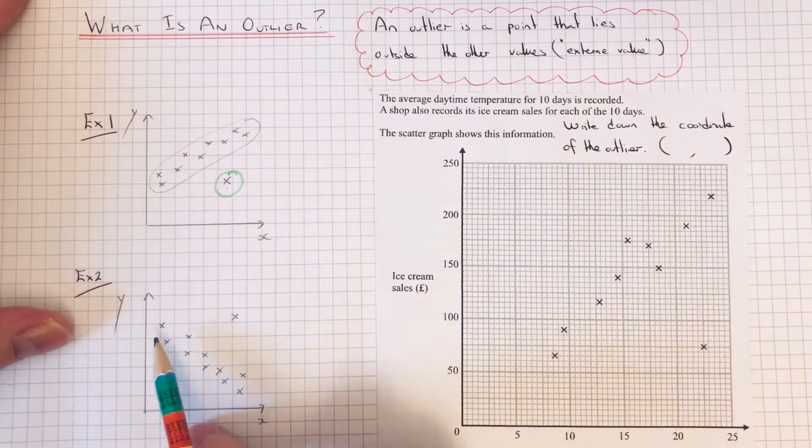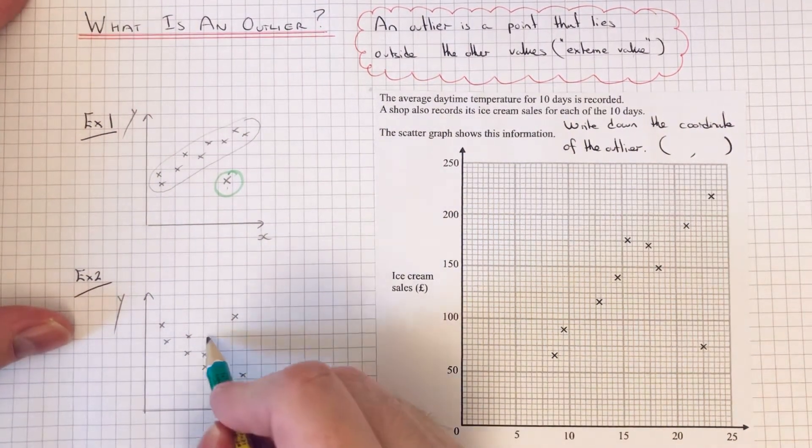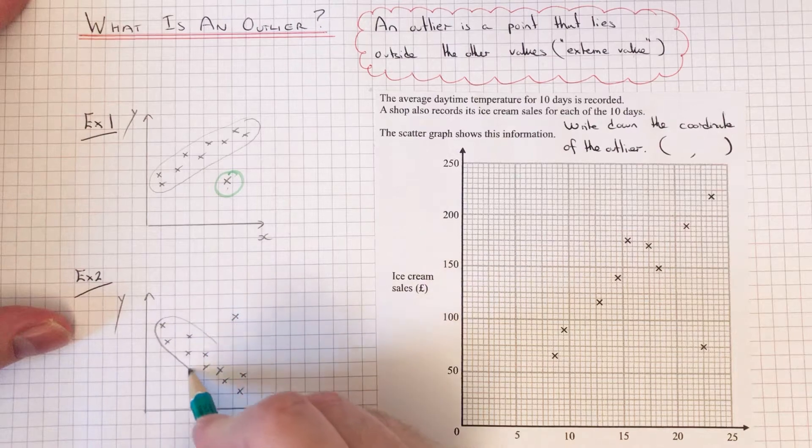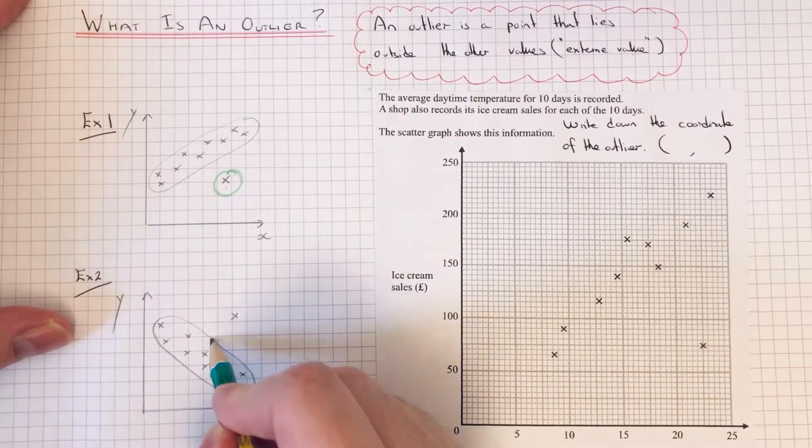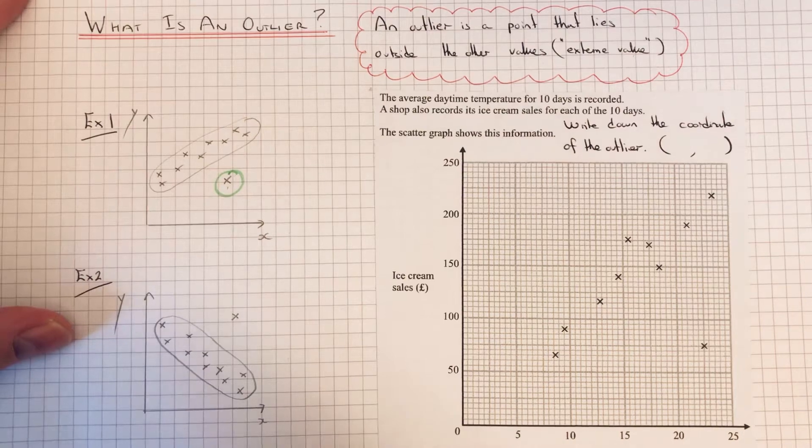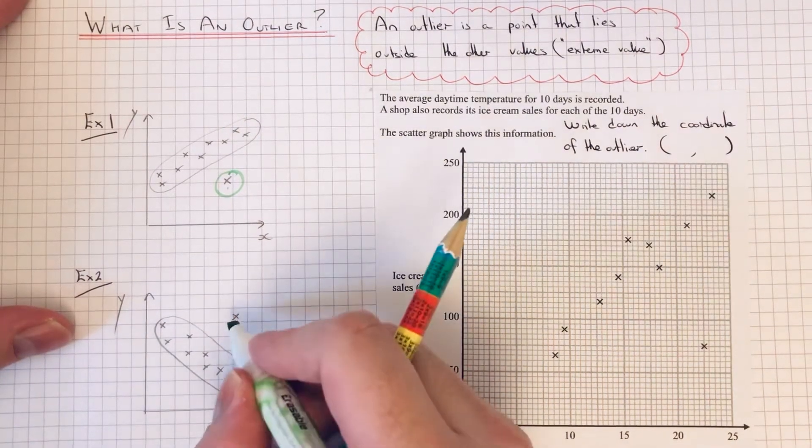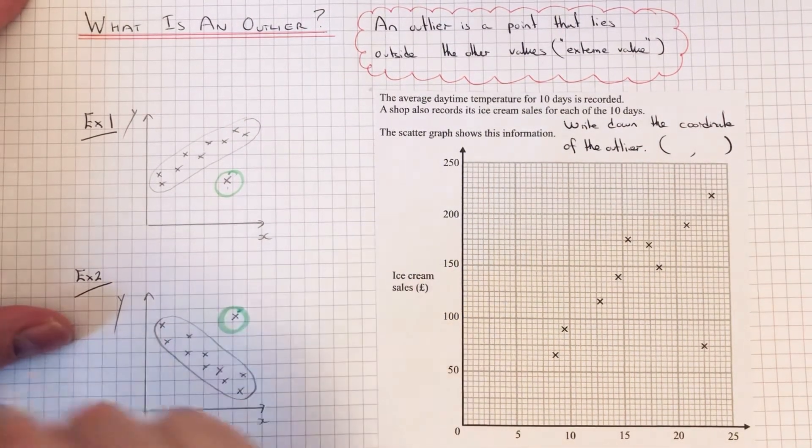Let's have a look at example two. Again, most of our points are here, and this one here is further away from those other points. So again, this one is the outlier.